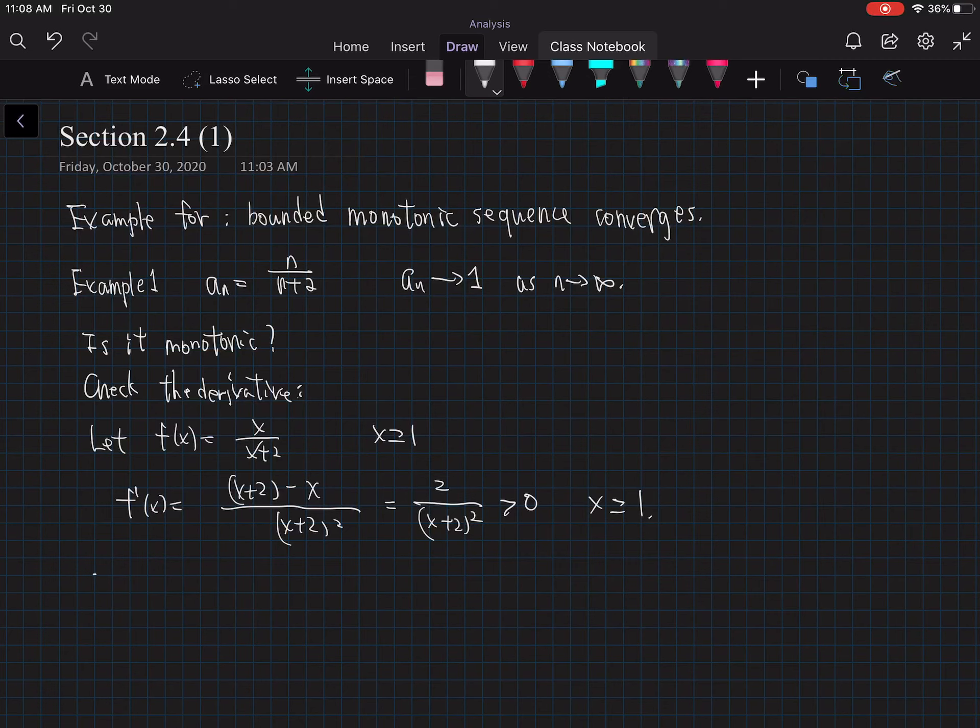So f is an increasing function. It's monotonic. Also, n over n plus 2 is less than 1. Obviously, it's a proper fraction.